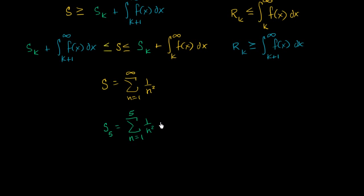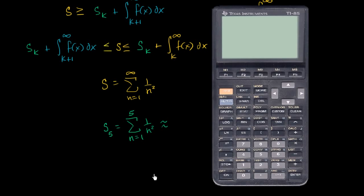This is going to be one over one squared, which is one, plus one over two squared which is one fourth, plus one over three squared which is one ninth, plus one over four squared which is one sixteenth, plus one over five squared which is one twenty-fifth. And we get this value right over here — it's approximately 1.464.